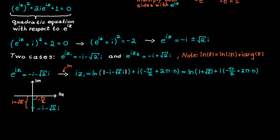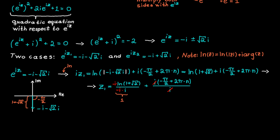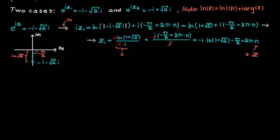Dividing both sides by i gives c equal to ln of 1 plus the square root of 2, divided by i, plus i times minus pi over 2 plus 2pi times n, all divided by i. This simplifies using the fact that i in the denominator is the same as minus i in the numerator. That gives us the solution for the first case. Now we do the same for the second case, which follows exactly the same principles.